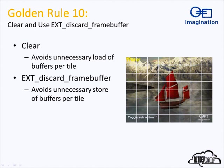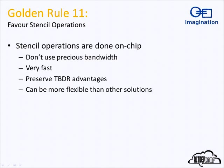Rule ten: use clears and use extensions like EXT_discard_framebuffer. This means we don't have to read information from memory before processing a tile, and we don't have to write it out when we finish. We don't need to keep a depth buffer in memory if you're not going to use depth between scenes — it's a good idea to clear on every architecture, and EXT_discard_framebuffer is very important on PowerVR cores. Rule eleven — PowerVR specific: favor stencil operations. We can do stencil operations on chip, avoiding memory reads, and it's more flexible than scissor operations since you're not limited to rectangles.